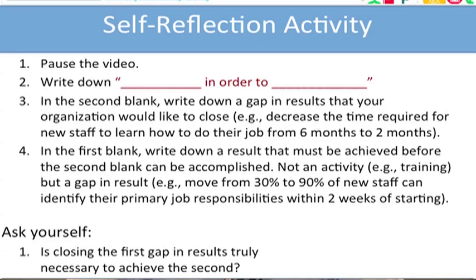For example, the gap in results for the organization might be to decrease the time required for new staff to learn how to do their jobs from six months down to two months — a four-month gap in results that we'd like to close as an institution. In the first gap, we might write down that we have to move from 30% to 90% of new staff being able to identify their primary job responsibilities within two weeks of starting the job. So we now have a second gap in results that we'd like to close, and it's that relationship that is going to be critical. Please write this down for your organization and reflect on what is that relationship between the two gaps in results you've identified.